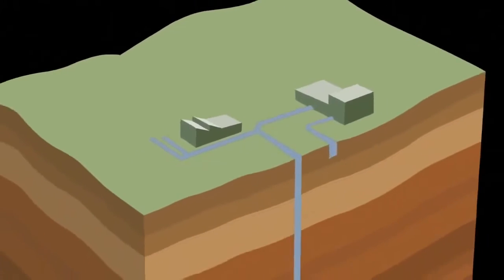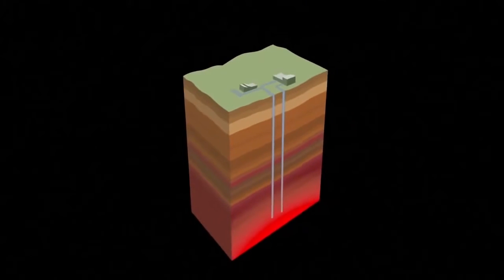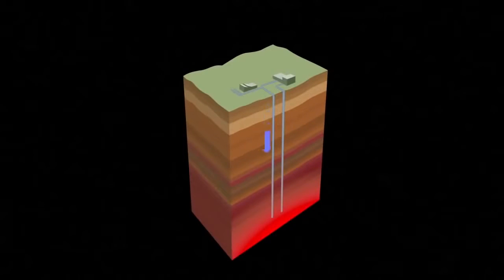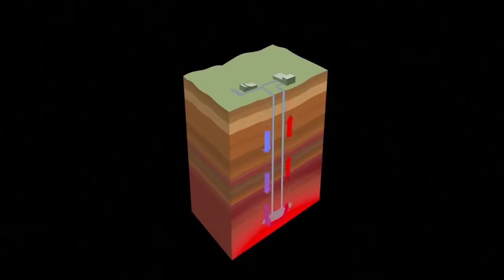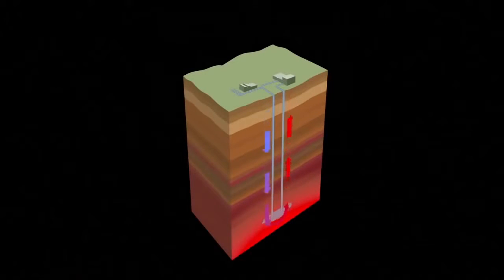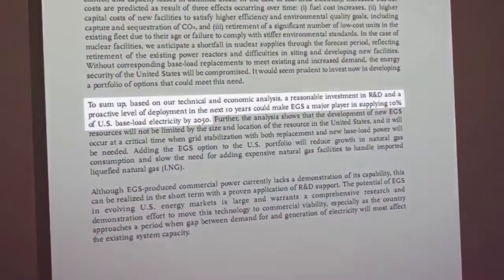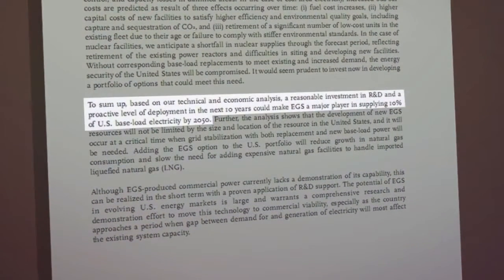In the experimental EGS system, two shafts would be drilled six miles deep. Water is pumped down one shaft to be heated in fissures, then rise up the other, generating power. According to a recent MIT report, this technology might supply 10% of US electricity by 2050.